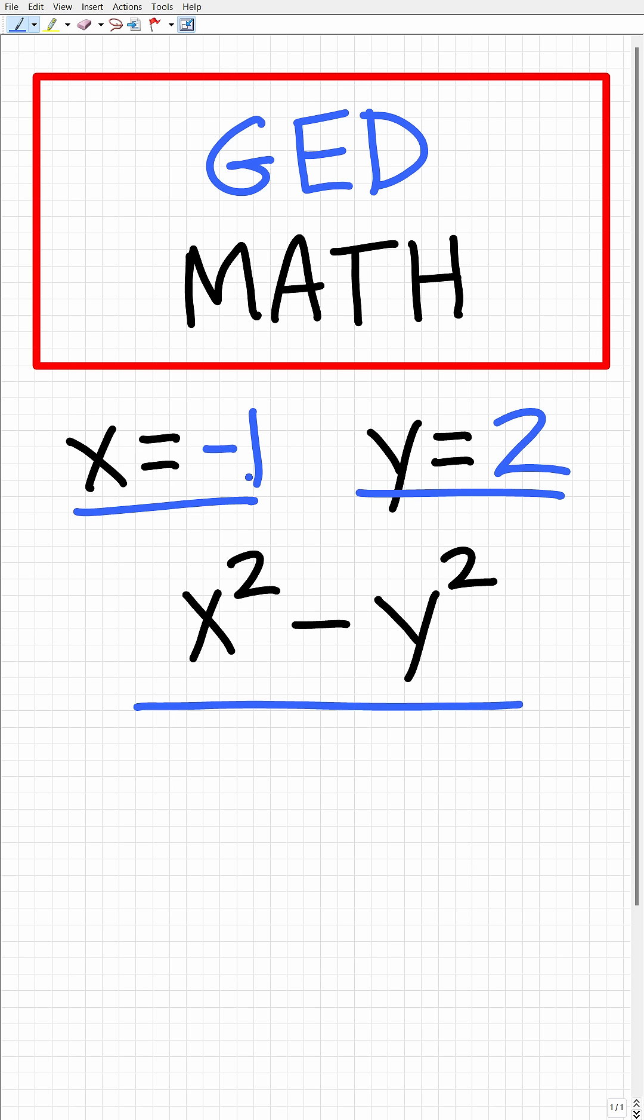So x is equal to -1 and y is equal to 2. To evaluate means that we're going to replace these variables with these numbers and then simplify.